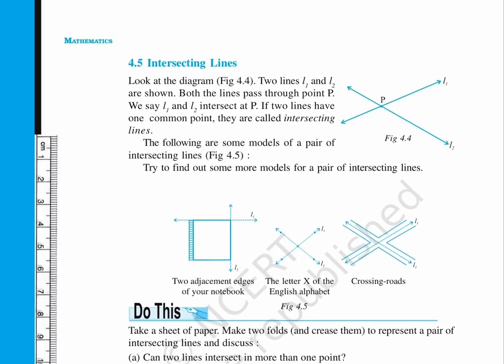Page 72. 4.5 Intersecting Lines. Look at the diagram, figure 4.4. Two lines, L1 and L2, are shown. Both the lines pass through point P. We say L1 and L2 intersect at P. If two lines have one common point, they are called intersecting lines.